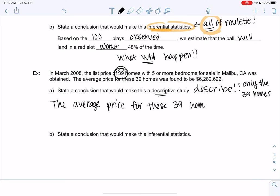The average price for these 39 homes, I might add details, five bedrooms or more. I'll say five-plus bedrooms in Malibu was $6,282,692. Descriptive, describing.